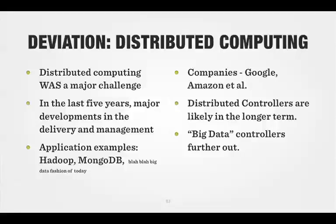To summarize: distributing computing was a major challenge, but in the last five years there have been major developments in the delivery and management of software. Today we have working examples of distributed computing — things like Hadoop, MongoDB, and big data platforms. Pick any big data technology going around today and they're all distributed computing executions. Other examples of distributed computing are Google, Amazon, and Yahoo, who do quite significant work in this space.